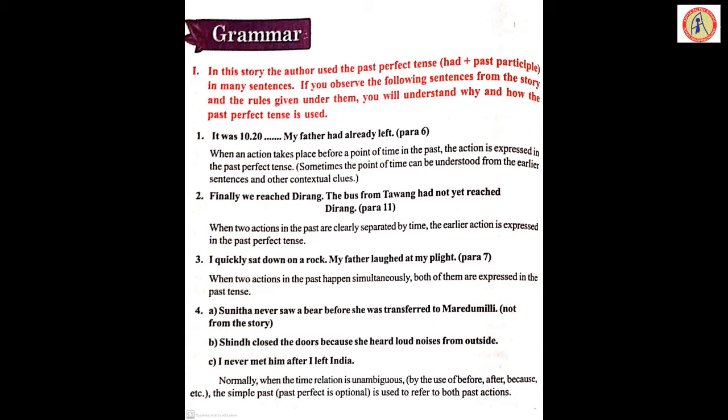Rule 3: When two actions in the past happen simultaneously, both are expressed in the simple past tense. Example: 'I quickly sat down on a rock. My father laughed at my plight.' Both actions happened at the same time without a gap, so both use simple past tense. This is very important: unlike rules 1 and 2, where there is an earlier and a later action, in rule 3 both actions happen simultaneously and both are in the past tense.